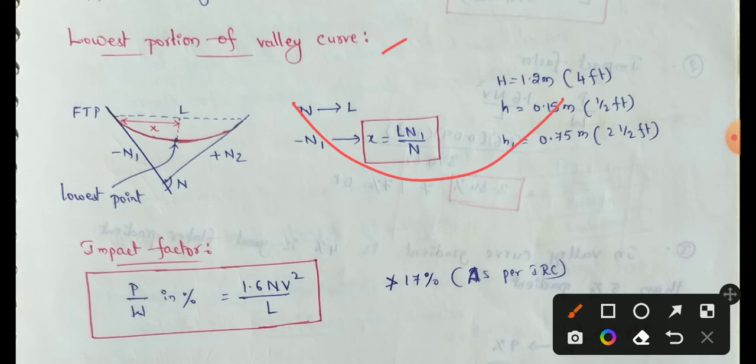First, the valley curve is a transition curve. The transition curve means the valley curve has a radius of infinity. As you look at infinity, the radius increases.